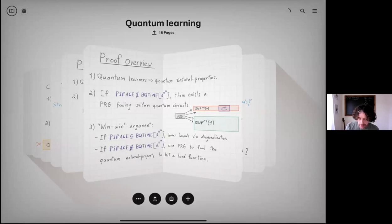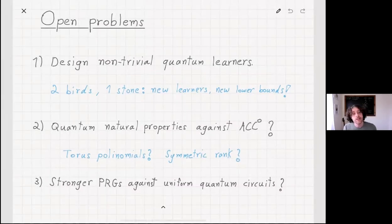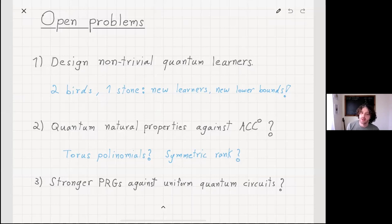Let me conclude by mentioning some open problems, three of them. The first one is the quite obvious one: can we design non-trivial quantum learning in that setting? This is a way of hitting two birds with one stone. On the one hand, we get new quantum learners, and we also win by having some nice new lower bounds.